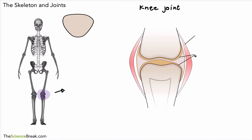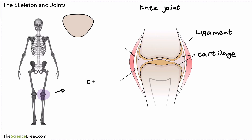We're going to label these parts — there are a few labels we need to know the names and functions of. Let's start off with this part here — this is called a ligament. You can see there are two of them, one on each side. That slightly brownish color is called cartilage. On the other side we have a little capsule, and we have a fluid that's inside that capsule. The ligament's job is connecting bones together — ligaments join or connect bones together.